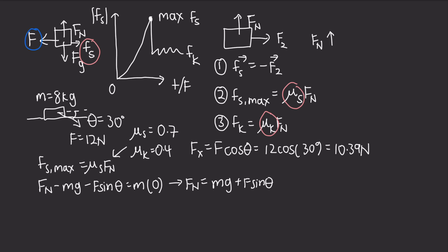Now we can plug this back in to our original frictional equation. And we get that fs,max equals μs times (mg plus f sine θ). And then plugging things in, we get 0.7 times 8 times g, which is just 9.8 meters per second squared, plus 12 times sine of 30 degrees. And that gives us about 59 newtons. So from this, we can see that fx is less than fs,max. And this means that it will remain stationary.